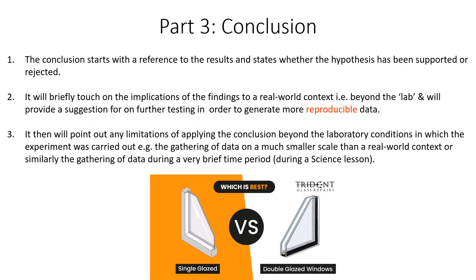The third and final section is the conclusion, which will often be presented separately from the actual discussion. We start by referring to our results, restating our hypothesis, and stating whether it is supported or rejected. Then we try to bring a real world context to our findings. In this case, our results indicate double glazing is more effective than single glazing in insulating the effects of heat transfer from a thermal source. But we would encourage further testing — particularly in relation to that precision comment — so that we can generate more reproducible data, which is good science.